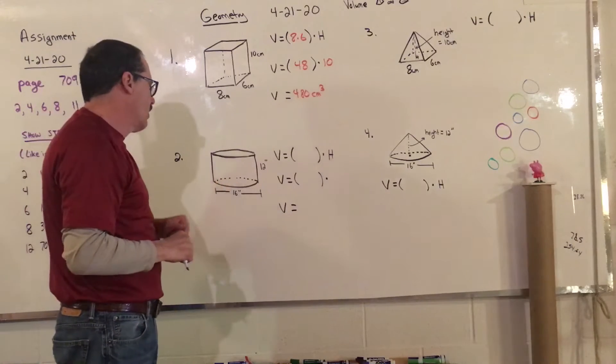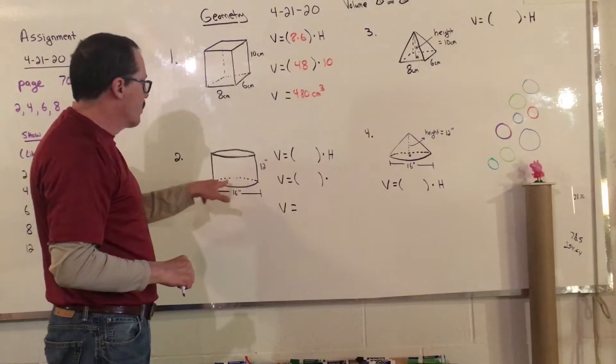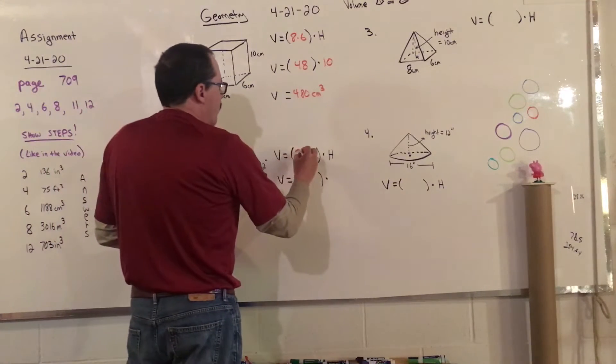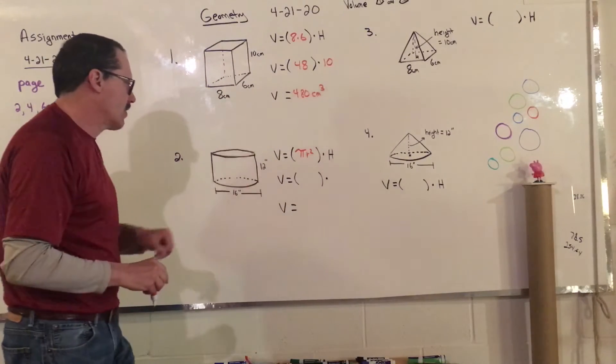Next one we're going to look at is a cylinder, and on the cylinder, the base is not a rectangle this time. It is a circle, and so the area of the base, I'd have to use pi r squared times h is the height of the whole thing. That always stays the same.